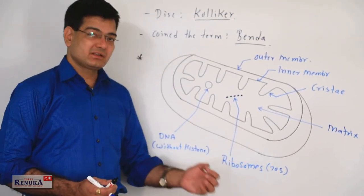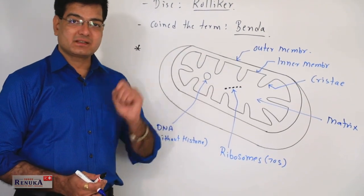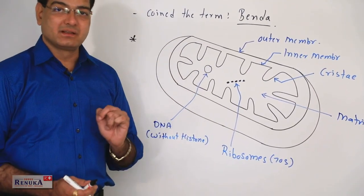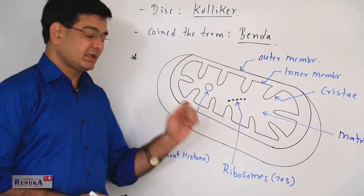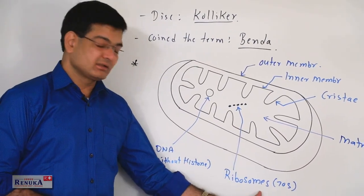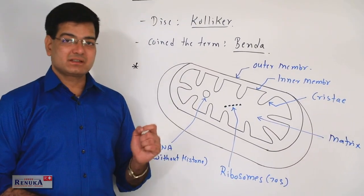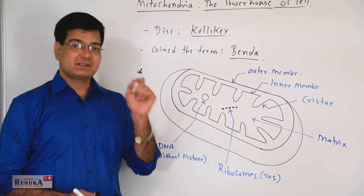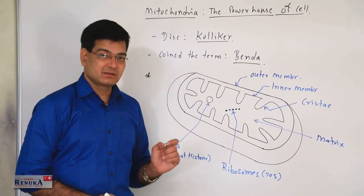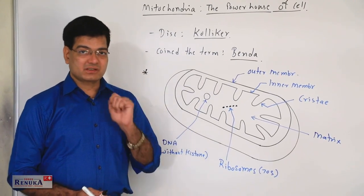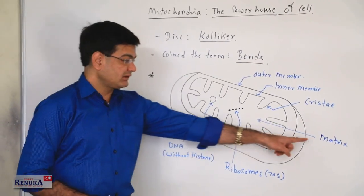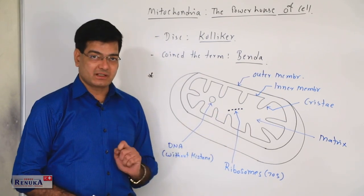Ribosomes are the protein-synthesizing machinery of the cell, found in the mitochondria. They are concerned with the synthesis of proteins that act as enzymes for the Krebs cycle. Krebs cycle is the process of aerobic respiration which occurs in the matrix of mitochondria.